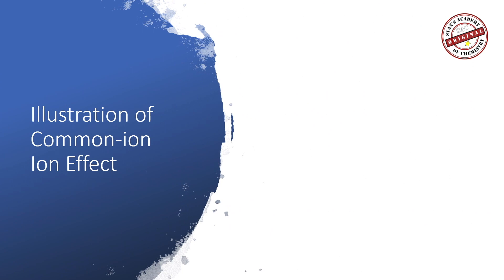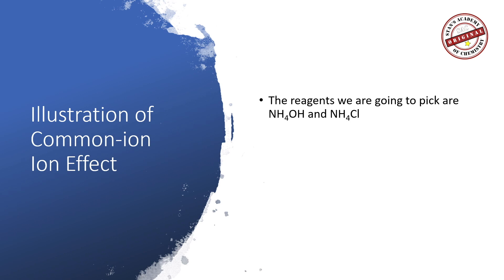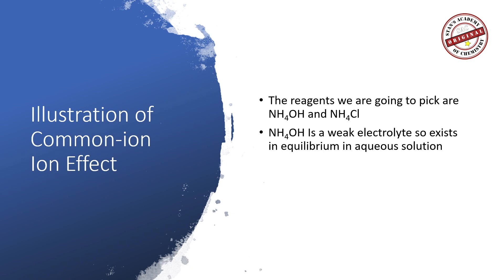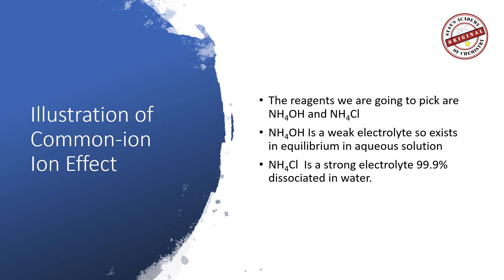To explain the common ion effect here, the reagents we choose are ammonium hydroxide and ammonium chloride, which allow us to control the concentration of hydroxide ions in the solution containing aluminum and zinc ions. Ammonium hydroxide is a weak electrolyte that always exists in equilibrium, while ammonium chloride is a strong electrolyte that dissociates almost 100%, producing ammonium ions and chloride ions.